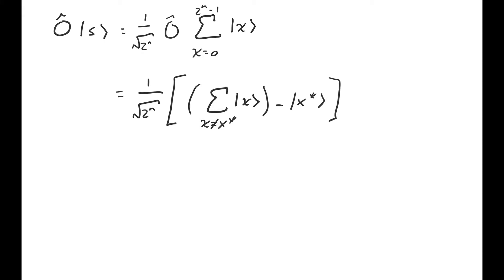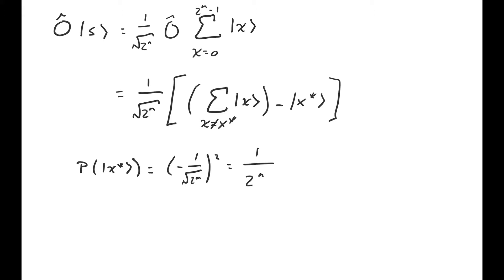You may be thinking that we're done and that Grover's algorithm is super simple — we can just grab the basis vector that has negative 1 over root 2 to the n as its amplitude. Unfortunately, in quantum computing we don't get to see the full state the system is in. The only way we can get information about the system is when we make a measurement, and in that case we just observe one basis vector. For this state, the probability of finding the system in the state x star upon measurement is just negative 1 over root 2 to the n squared, or 1 over 2 to the n — the same probability as finding any other basis state. So we might as well have just measured the uniform superposition.